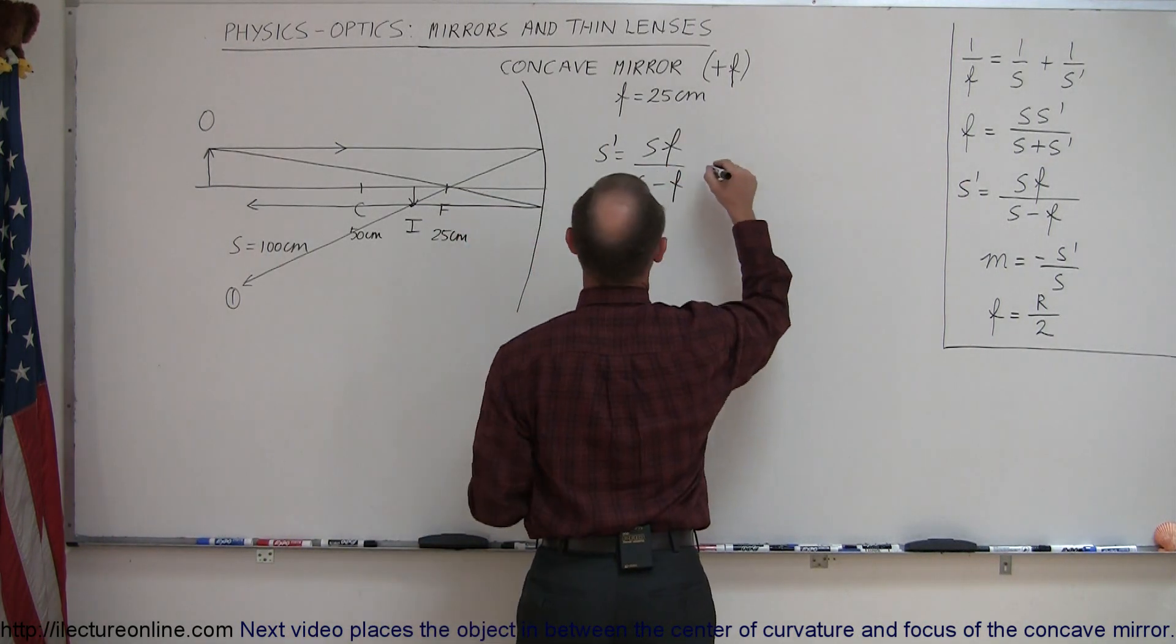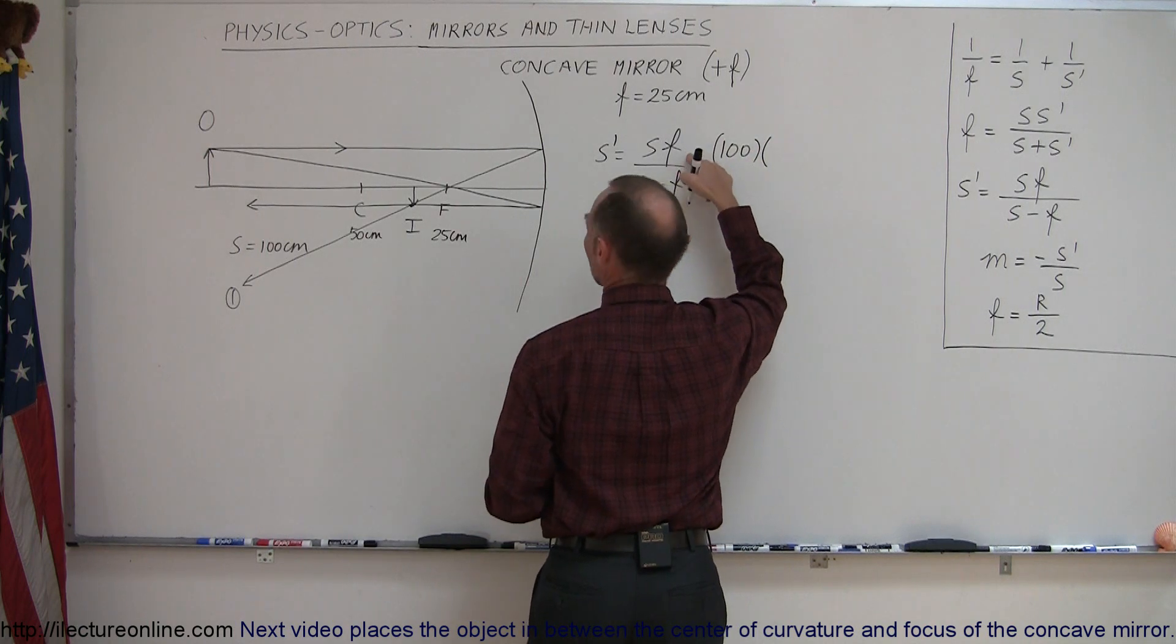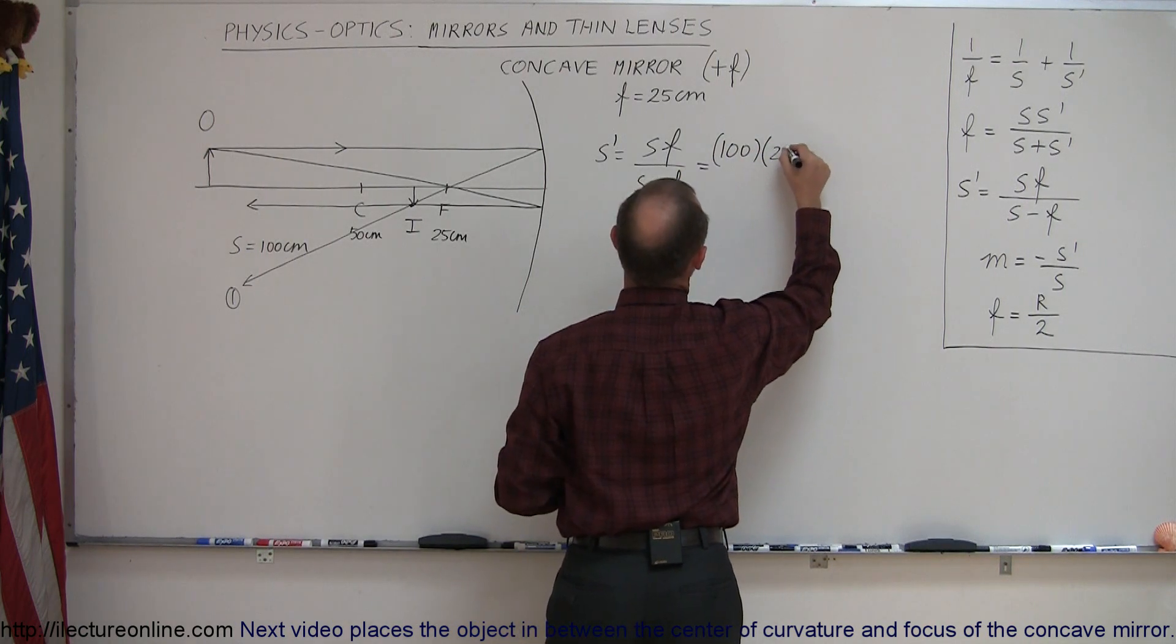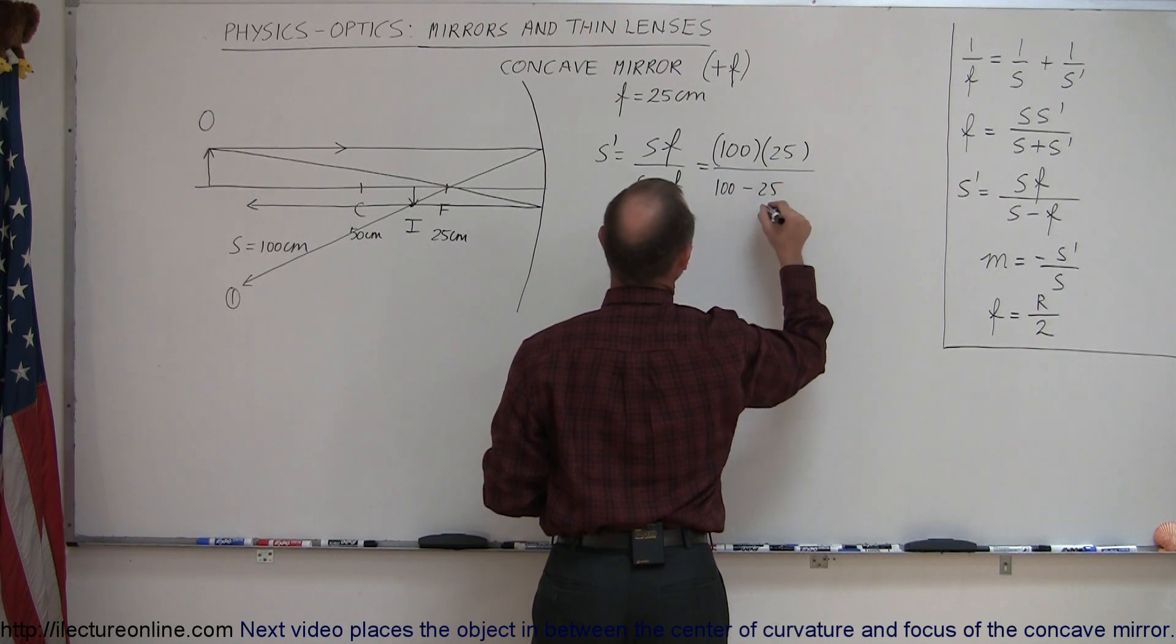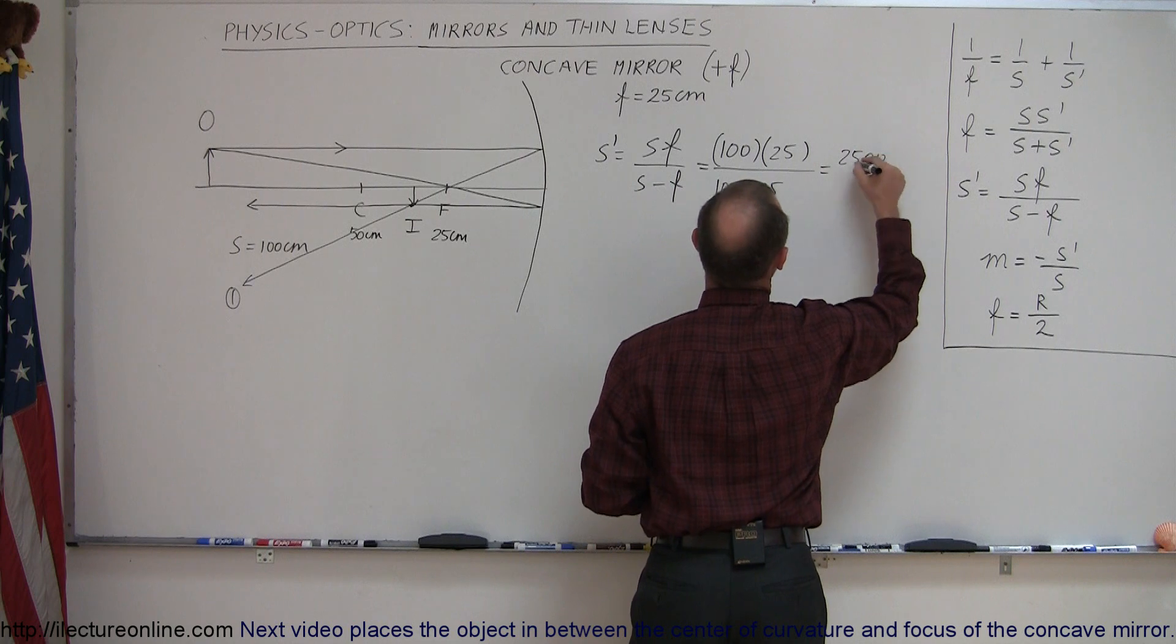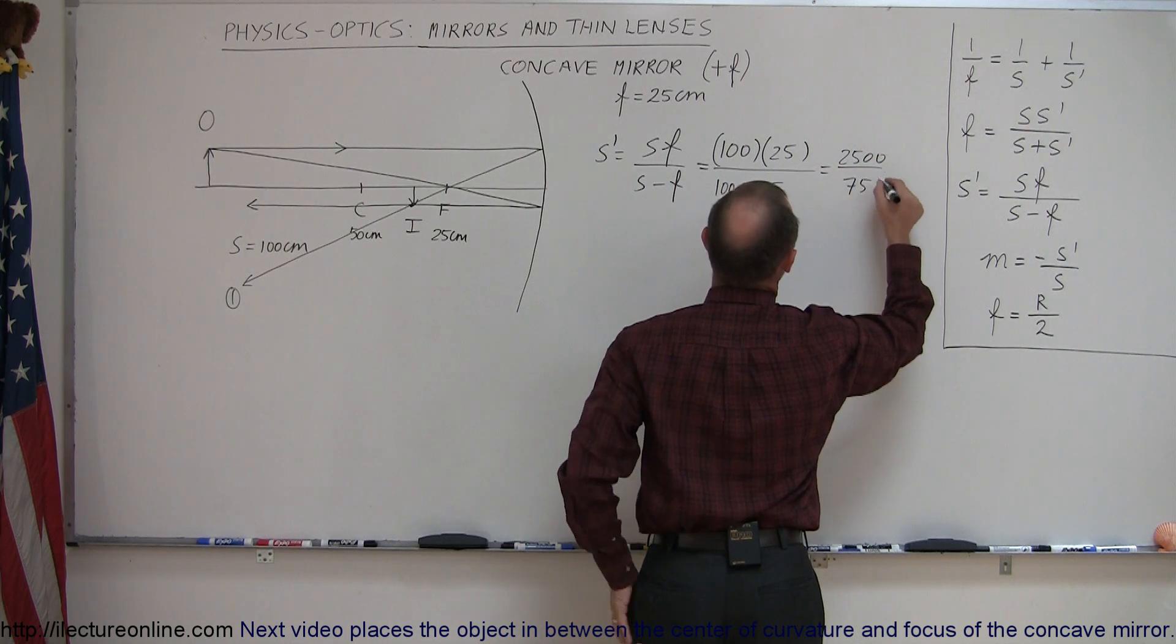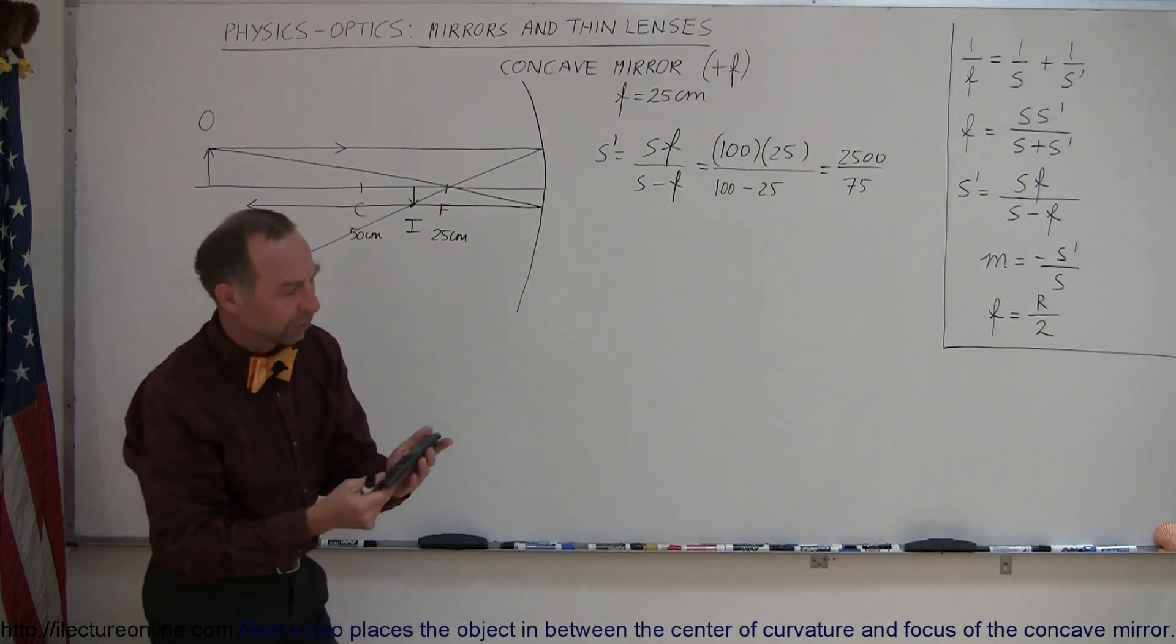S is the distance to the object. That would be 100 centimeters, and I'm going to leave off the centimeters to keep it clean. The focal length, 25 centimeters, divided by 100 minus 25. So this is equal to 2,500 divided by 75, and quickly grab a calculator, because that's not a nice round number.